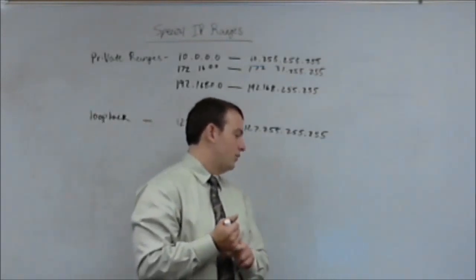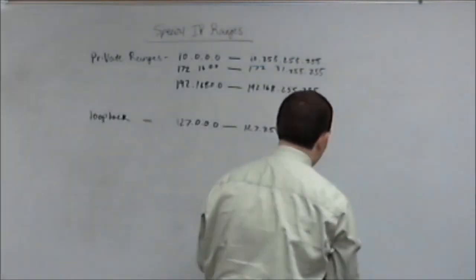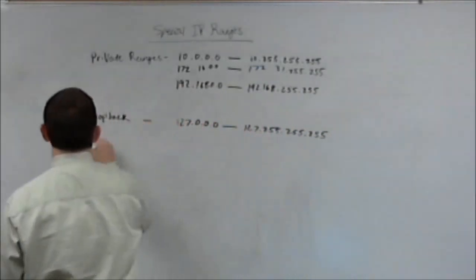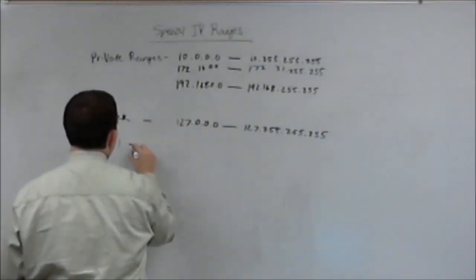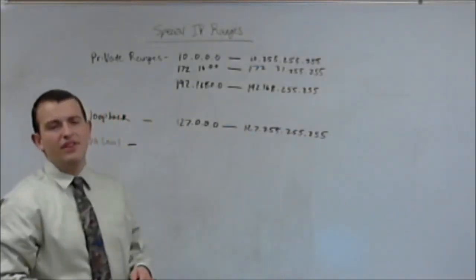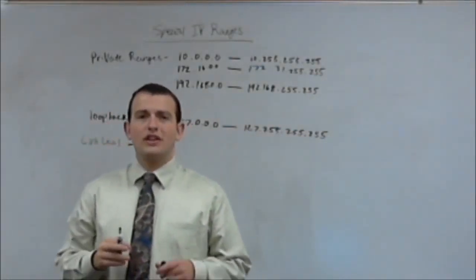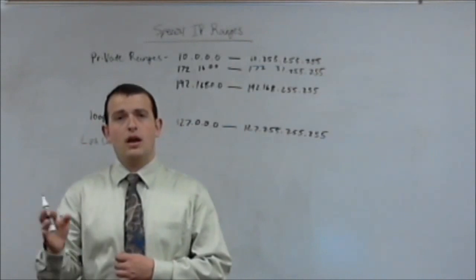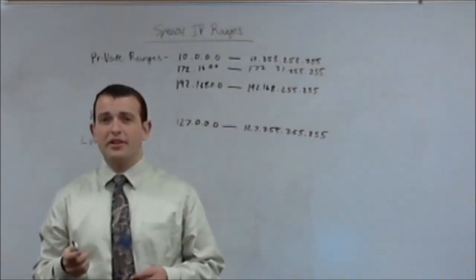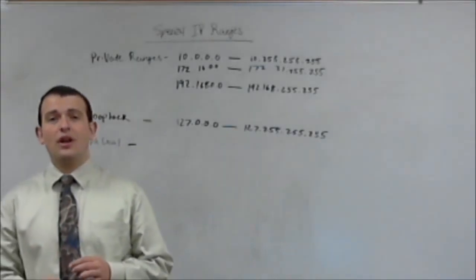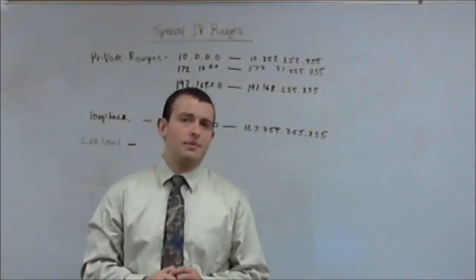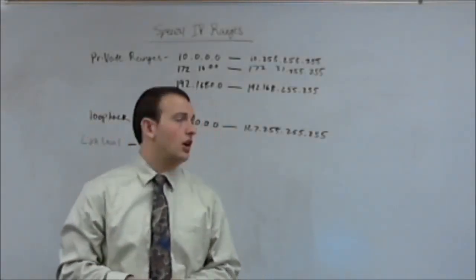The next one we're going to learn is link local addresses. Link local addresses are IPv4 addresses that are reserved for a local connection, cannot be routed on the internet, and every host can assign its own address just in case DHCP isn't working. This is done through a process called APIPA.